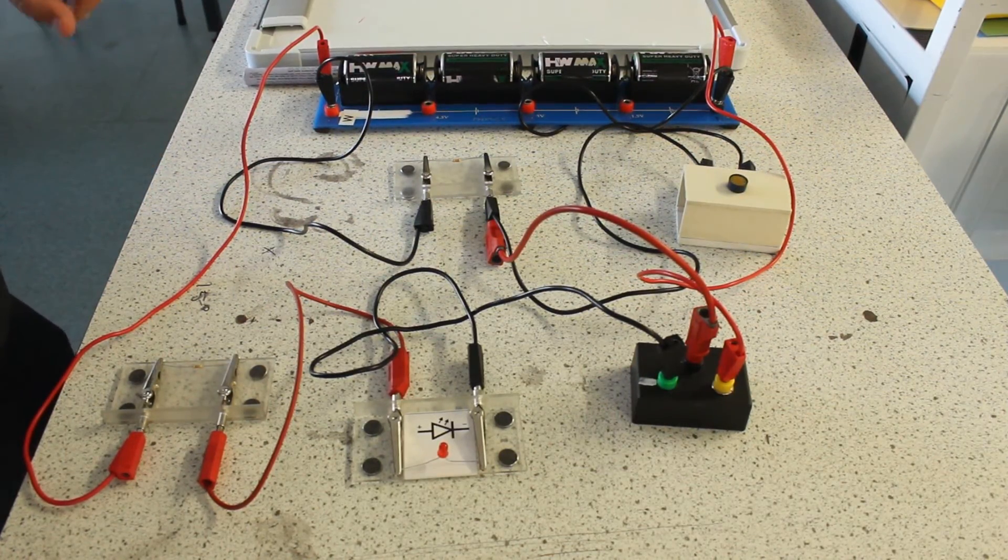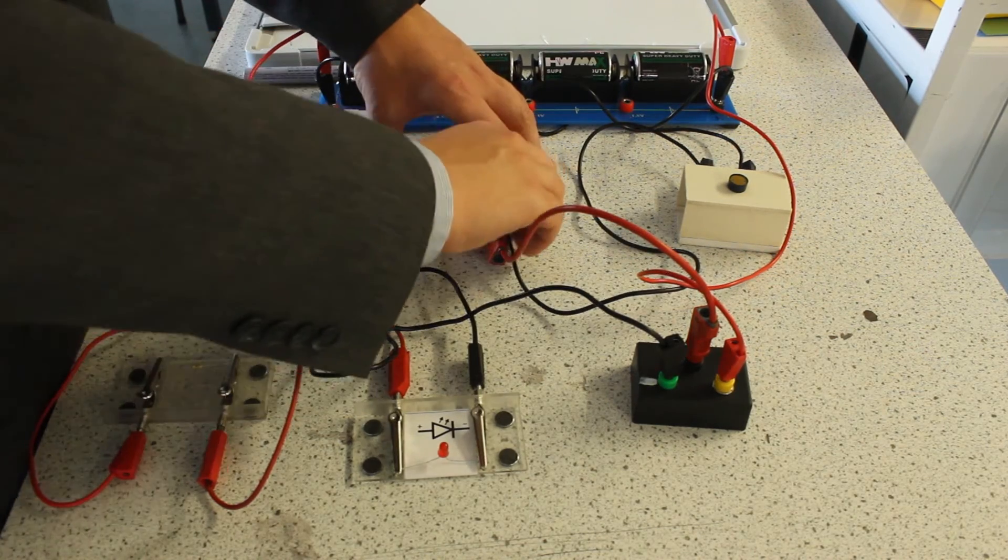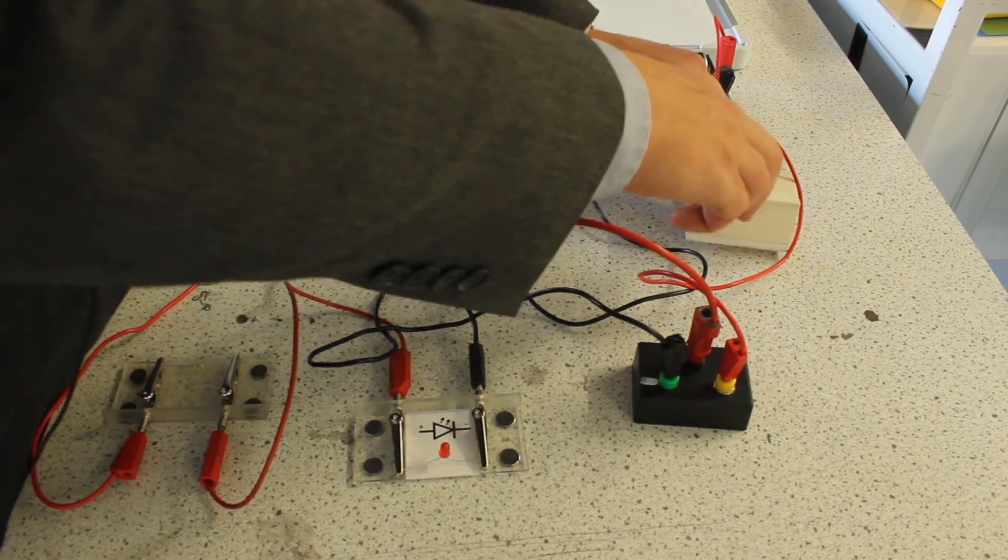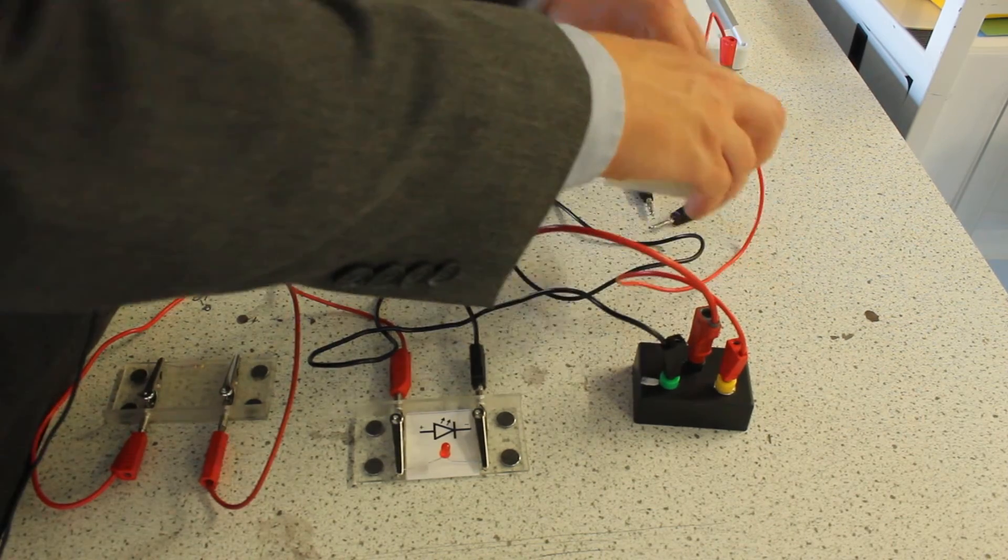I'm now going to switch around the LDR and the fixed resistor to show you that we can have an LED that's permanently lit and only goes off when the LDR is in darkness.